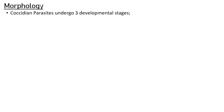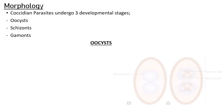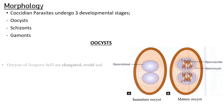All coccidian parasites undergo three developmental stages: the oocyst stage, the schizont stage, and the gamete stage. The oocyst stage of Isospora belli is divided into two: the immature oocyst and the mature oocyst.